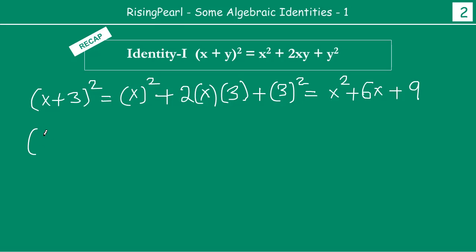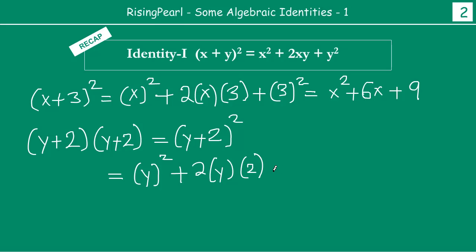Similarly, suppose, friends, if you are given y plus 2 times y plus 2, you are asked in the question to multiply this. So what will you do, friends? You will say that y plus 2 times y plus 2 is basically equal to y plus 2 whole square, which you can apply using identity 1. It will be y square plus 2xy plus y square. So y times y will be y square, plus 2 times 2 is 4, 4y plus 2 square is 4. So this is how if you multiply using identity 1, we can write it in this fashion.